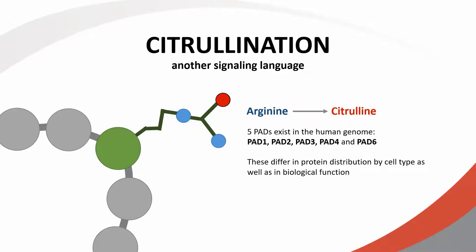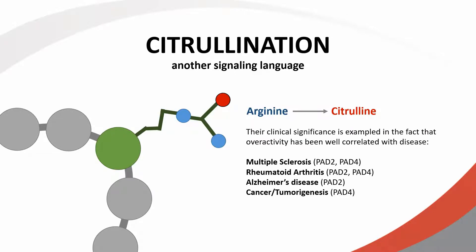Five PADs exist in the human genome, each of which are expressed in different levels in different cell types, and as a result they play an important role in a variety of biological functions. Of clinical relevance, multiple sclerosis, rheumatoid arthritis, Alzheimer's disease, and various types of cancer have all been linked to PAD overactivity.